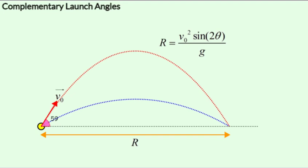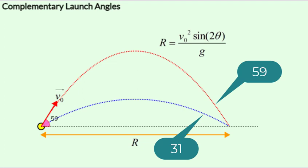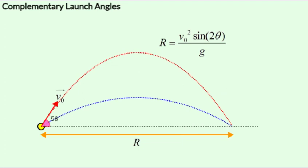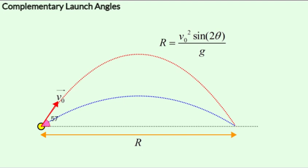So we increase from 30 to 31. So 31 and 59 give us the same range because they add up to 90, 32 and 58, 33 and 57.